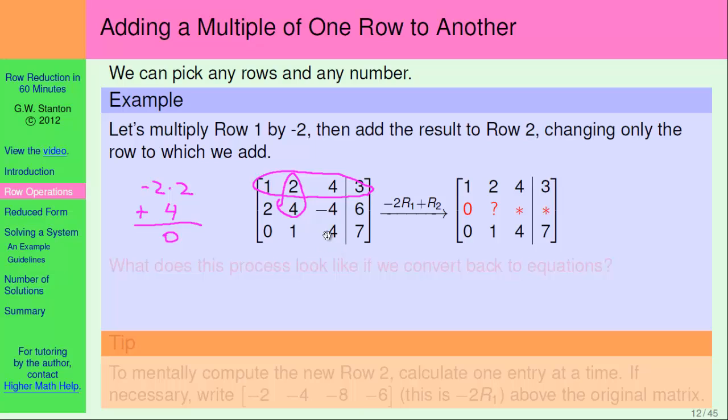So, we want to deal with the second entry now, and so I just think to myself, okay, negative two, I want to multiply that by the two in the first row, and then I'm going to add that to four, and that's negative four plus four, which is zero. Okay. So, the next entry should be a zero, and it is.